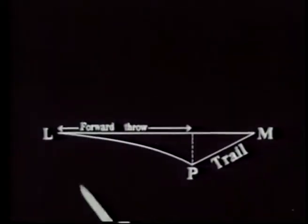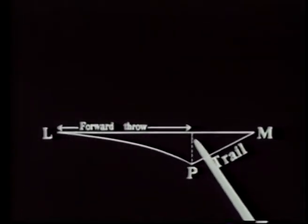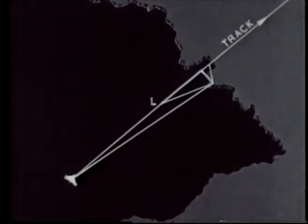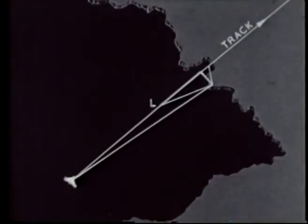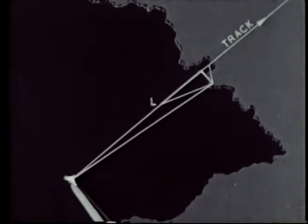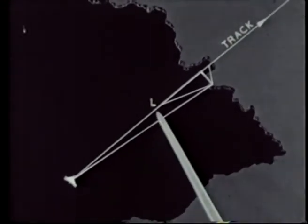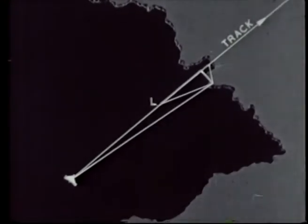We have now seen how forward throw and cross trail are calculated in NBS. If the markers have been set on a target, the aircraft must next be turned until cross range is equal to cross trail. It will then track down the correct path to the release point.